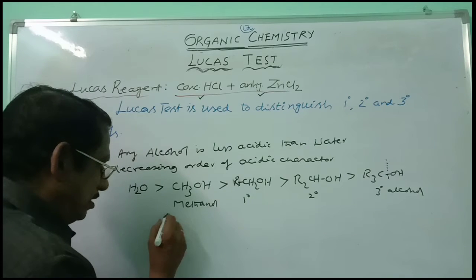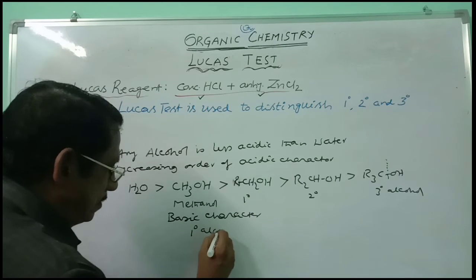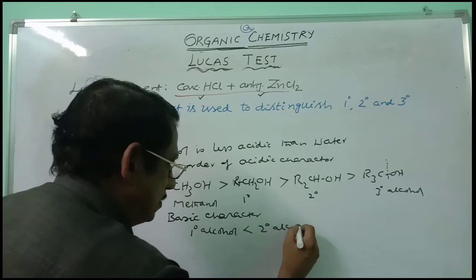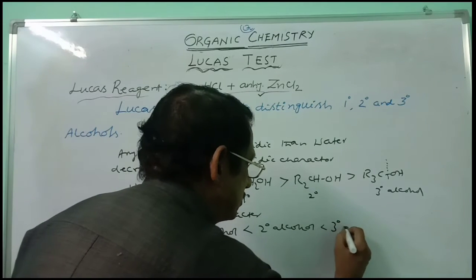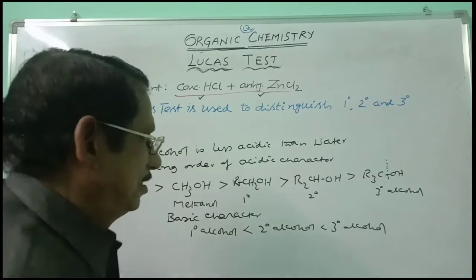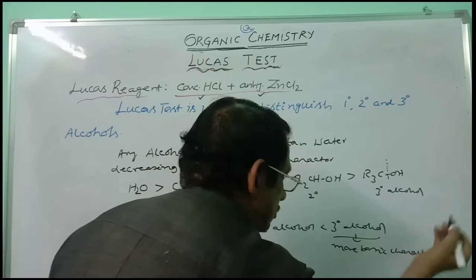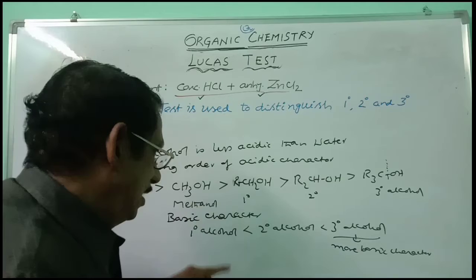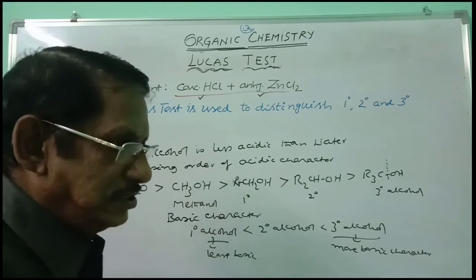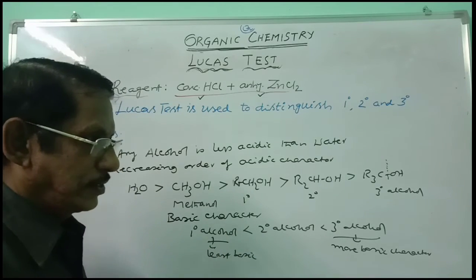If you take the basic character of these alcohols, primary alcohol is less basic than secondary alcohol, and secondary alcohol is less basic than tertiary alcohol. Out of all the alcohols, tertiary alcohol has the most basic character — relatively speaking. Primary alcohol is the least basic. And as it is the least basic, it is unable to give the reaction with concentrated HCl or Lucas reagent at ordinary temperature.